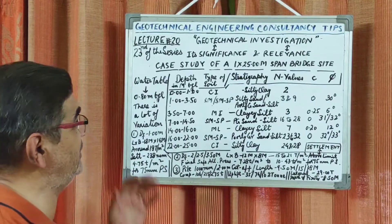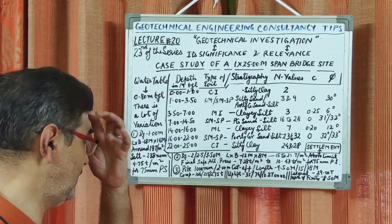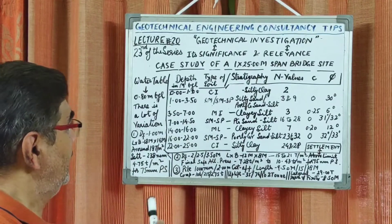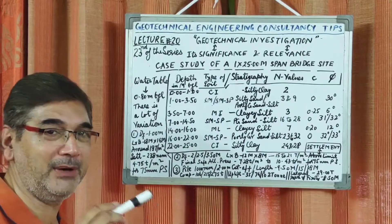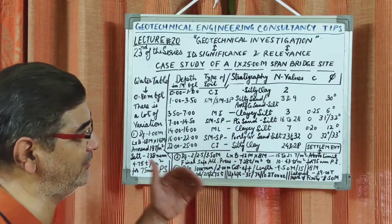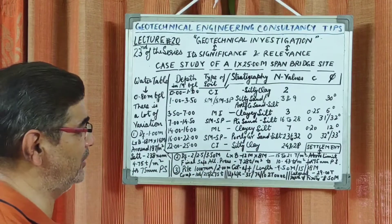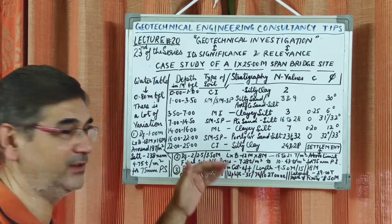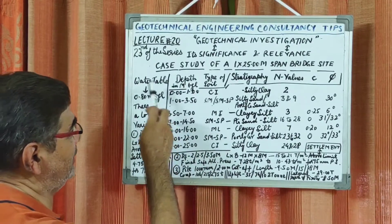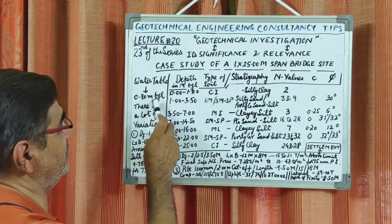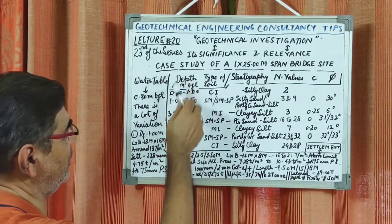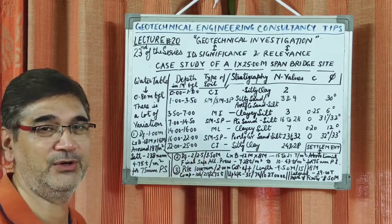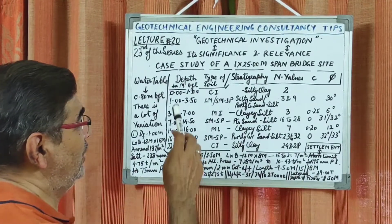What actually needs to be seen very seriously at this site is that we went there and explored a single borehole of around 25 meter depth. The findings are written in a table, and we will discuss how we finalized the report and what difficulties we faced. The first groundwater table was found at 0.80 meter below ground level, and we observed a lot of variation in the stratigraphy of the site from ground level to 25 meter depth.